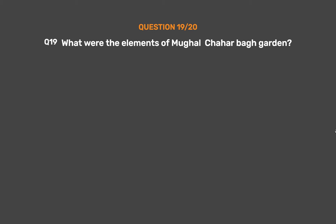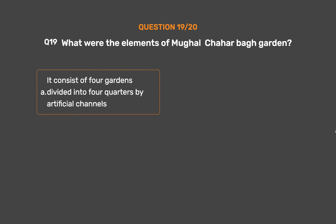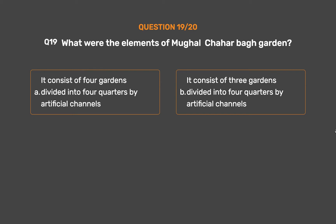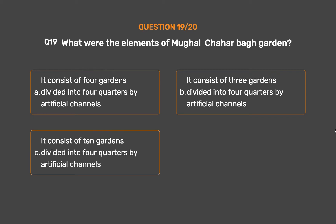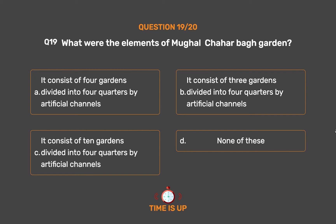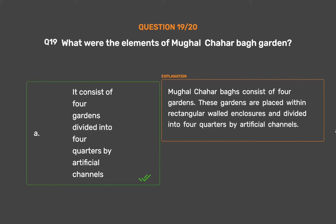Question No. 19: What were the elements of a Mughal Chahar Bagh garden? Option A: It consists of four gardens divided into four quarters by artificial channels. Option B: Three gardens divided into four quarters by artificial channels. Option C: Ten gardens divided into four quarters by artificial channels. The correct answer is Option A. Mughal Chahar Baghs consist of four gardens placed within rectangular walled enclosures, divided into four quarters by artificial channels.